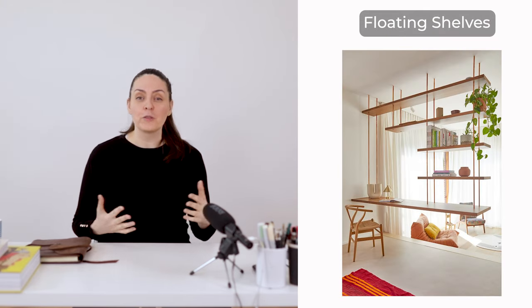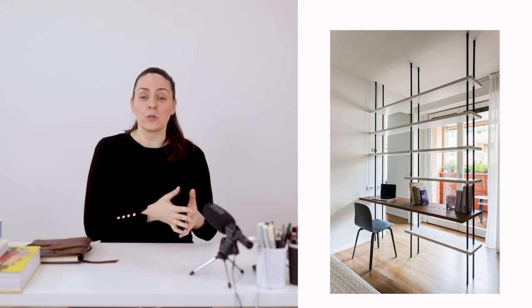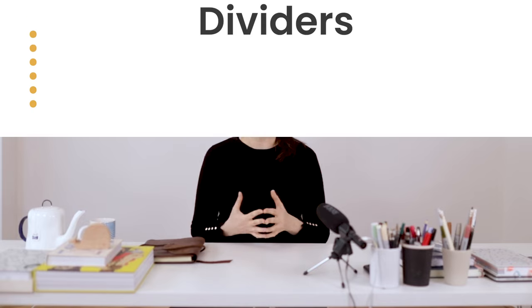Floating shelves create a more minimalist look, perfect for smaller spaces. They can support not just shelves but also a table, becoming more than a separation zone but also a functional area. Shelf dividers can also be low-level furniture pieces that aren't attached to the ceiling but stand on their own structure, used as room dividers providing storage space while keeping the room open and airy. This makes them particularly suitable for smaller homes, rentals, or apartments where maintaining a sense of spaciousness is important.